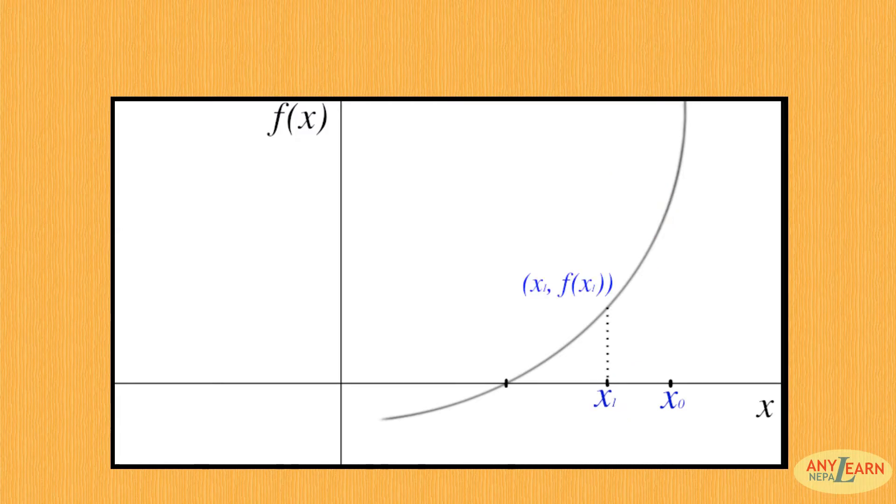Now we use x1 to repeat the process. That means we now draw a tangent to the curve at point (x1, f(x1)). This tangent crosses the x-axis at a new point, and x2 is our new approximated root. And we repeat the process until we get our desired precision.